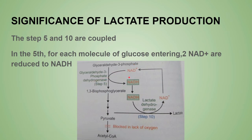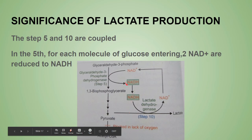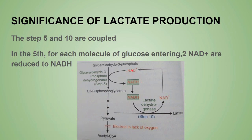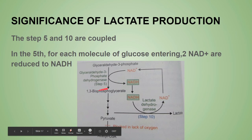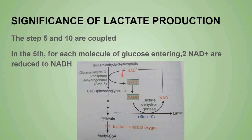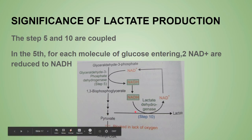NAD⁺ is present in limited amounts in the body, so NADH formed in step 5 must be reconverted to NAD⁺ for the pathway to continue. This reconversion can be done by oxidative phosphorylation, which requires oxygen. During strenuous exercise, oxygen availability is low, so this oxygenation of NADH to NAD⁺ is not possible through the normal aerobic route.